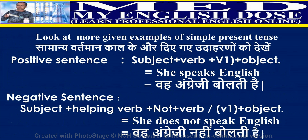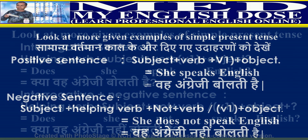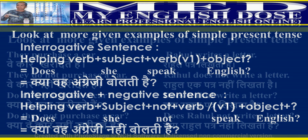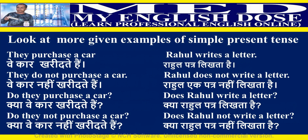Examples of simple present tense: Positive — She speaks English. Negative — She does not speak English. Interrogative — Does she speak English? Interrogative negative — Does she not speak English? Further examples: They purchase a car. They do not purchase a car. Do they purchase a car? Do they not purchase a car?